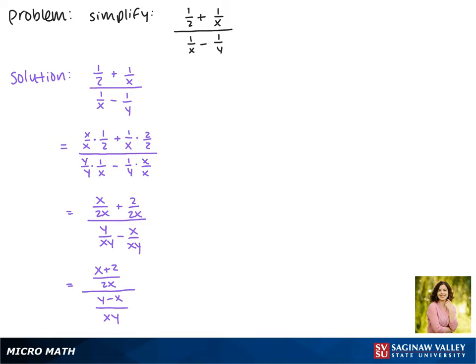Now we have a fraction divided by a fraction and what we have to do is multiply by the reciprocal. So this becomes x plus 2 over 2x times xy over y minus x.